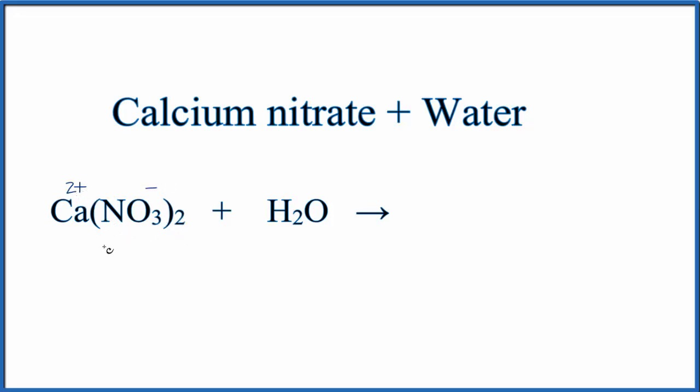And you can see I have two negative charges. Those will cancel out the plus 2. And because I have this plus 2 and then I have the two negatives, they're attracted to each other. They form that ionic bond.